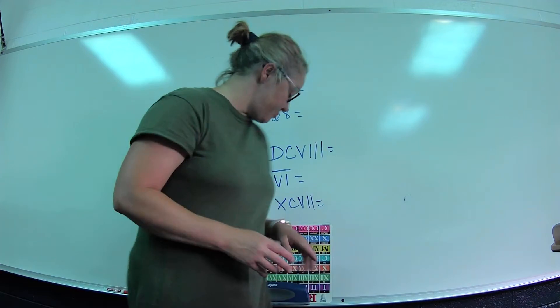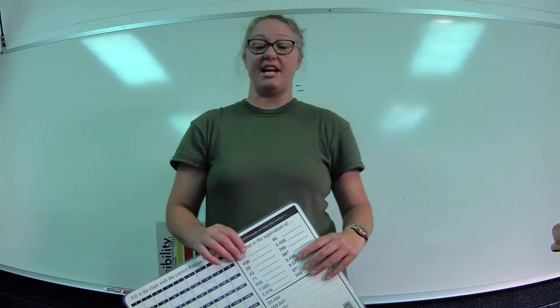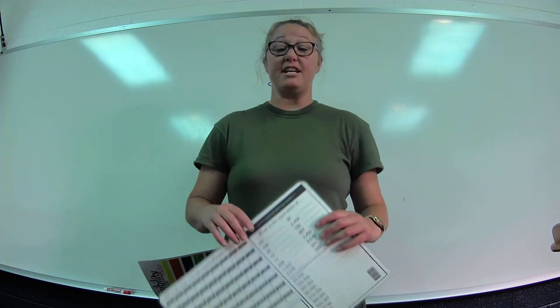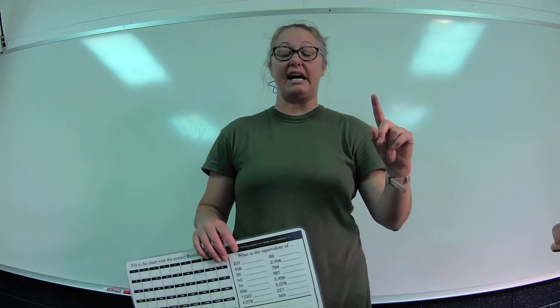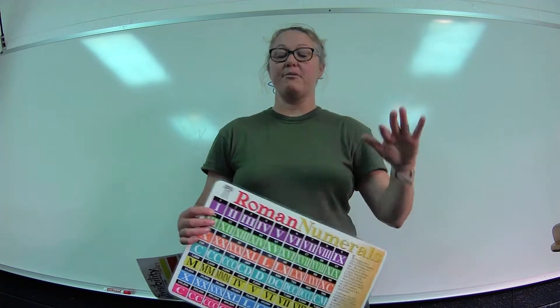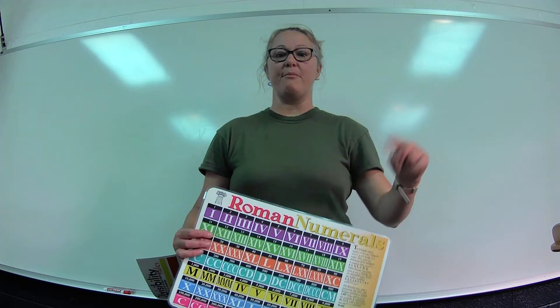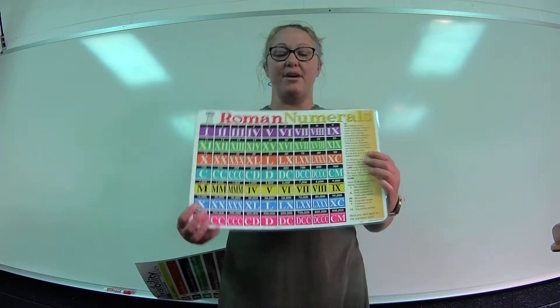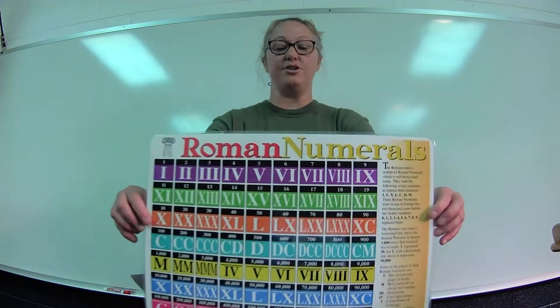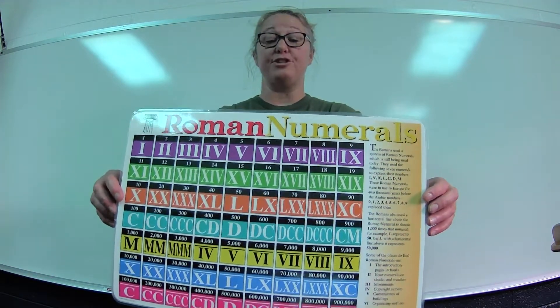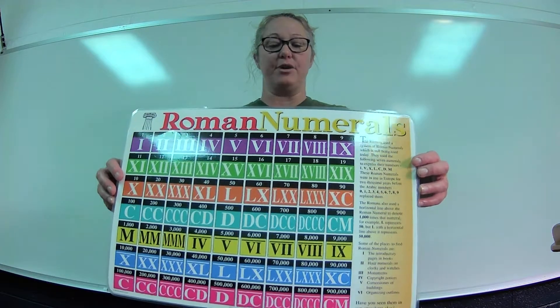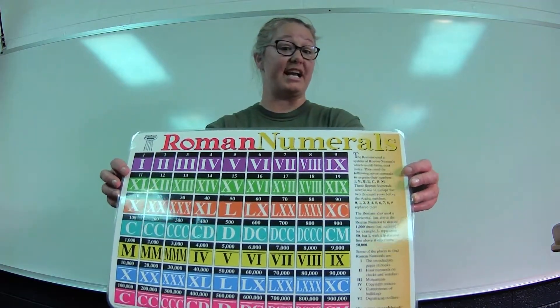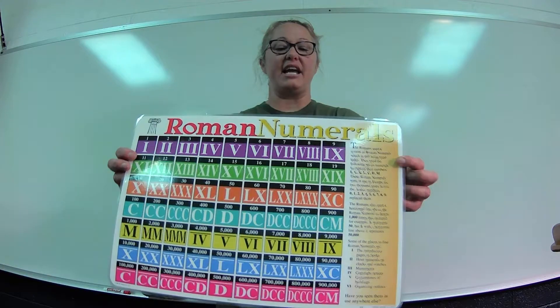15 minus 11 is 4, and 16 minus 7 is 9. Now — Roman numerals! Who remembers what V stands for? V stands for 5. I stands for 1. X is 10. M is 1,000 — remember, milli means a thousand. L is 50, D is 500, and C is 100 — like century, a century has a hundred years.